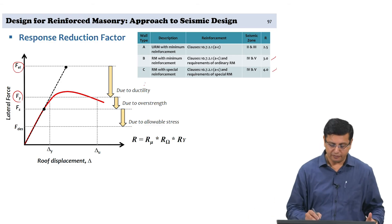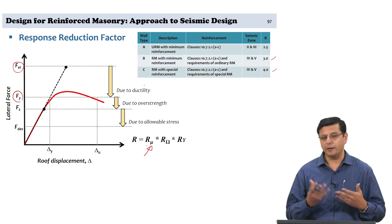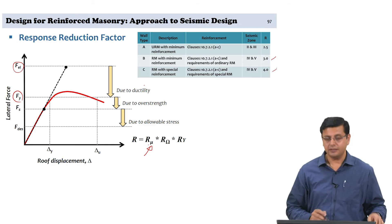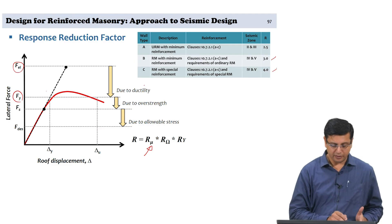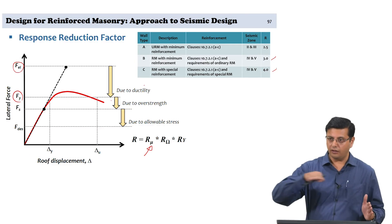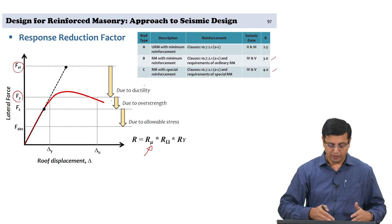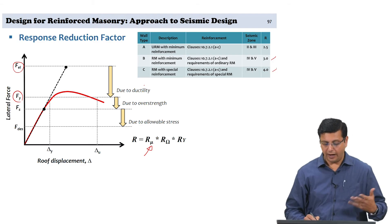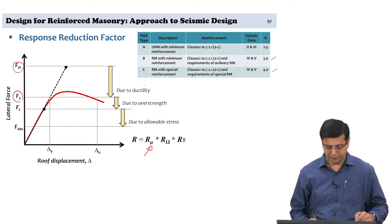We designate ductility with the factor R_mu — displacement ductility — which is the ratio of ultimate displacement delta_u to yield displacement delta_y. Since the structure is behaving almost horizontally beyond yield, R_mu captures the ratio of delta_u to delta_y, and equivalently reflects the ratio of F_elastic to F_Y. That is the first part.